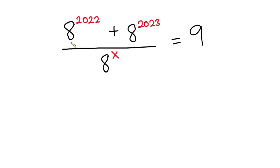Hello everyone. In this video we have this interesting problem: we have a to the power 2022 plus a to the power 2023, all divided by a to the power x, and everything is equal to 9.